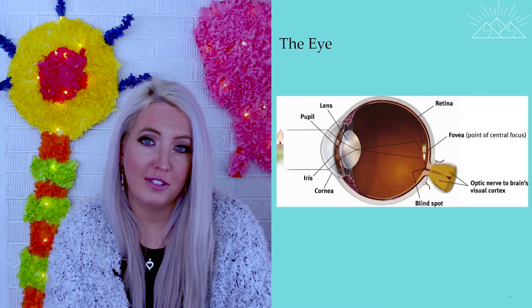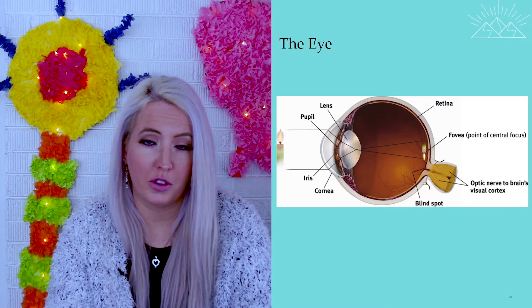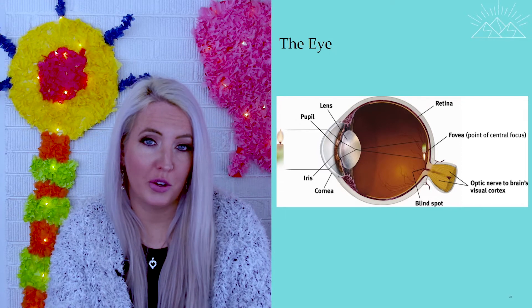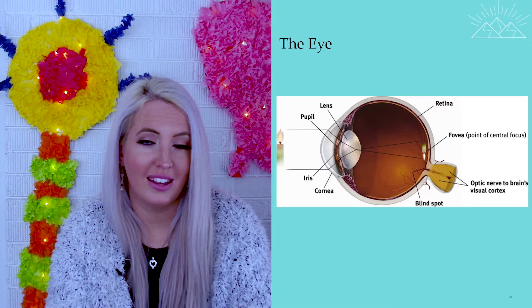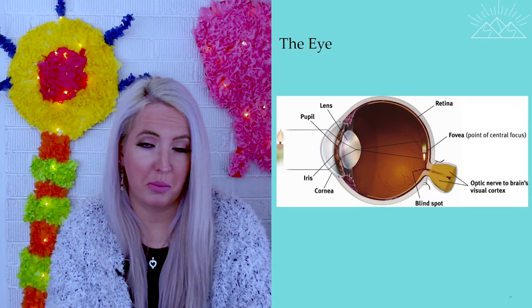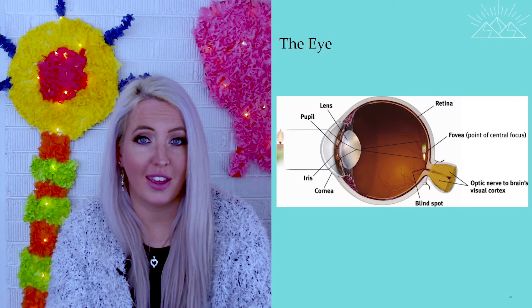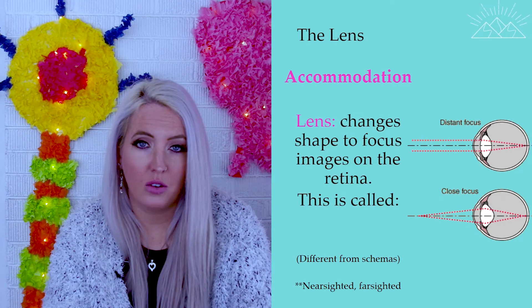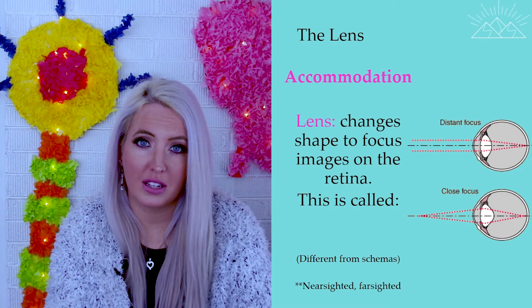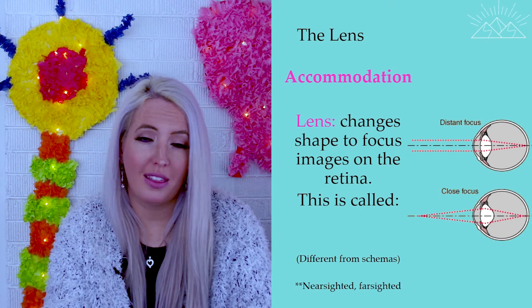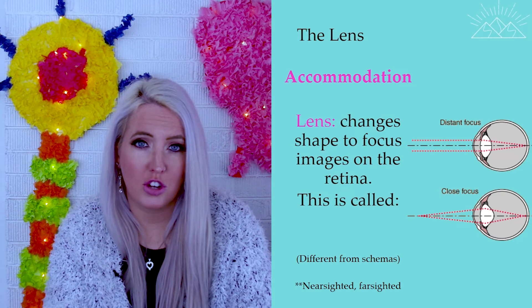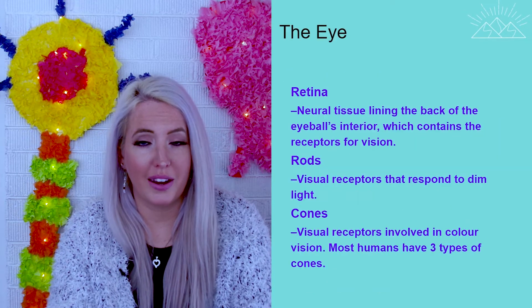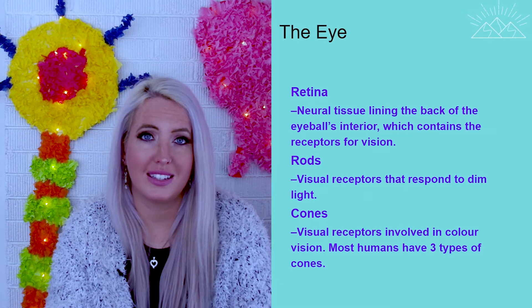The optic nerve is where this information exits your eye to go up into the brain. The blind spot is where that information comes together, so there are no cells there to take in visual information. It's a very small blind spot — most of you probably don't even notice that you have it. When looking at the process of vision, accommodation is what we call it when the lens of our eye actually changes shape to put something into focus, and that information can then land on our retina and fovea for us to be able to see it.